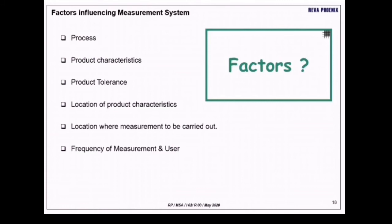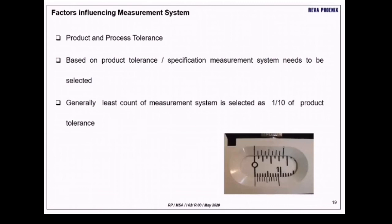The factors influence in the measurement system. Talk about process characteristics, tolerance, location. In the instrument, in the particular point, in the measurement carrier. What is the frequency. These are the factors which will influence the measurement system.